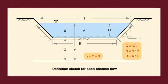The flow variables are: Mean velocity V; Flow area A; Discharge Q = V × A; Bottom width B; Top width T; Wetted perimeter P; Hydraulic radius R = A/P; Hydraulic depth D = A/T.